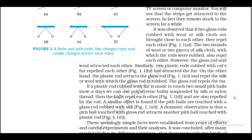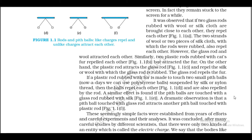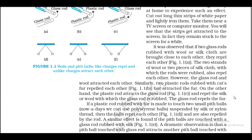If a plastic rod rubbed with fur is made to touch two small pith balls (nowadays we can use polystyrene balls suspended by silk or nylon thread), the balls repel each other (Figure 1.1d) and are also repelled by the rod. A similar effect is found if the pith balls are touched with a glass rod rubbed with silk (Figure 1.1e). A dramatic observation is that a pith ball touched with a glass rod attracts another pith ball touched with a plastic rod (Figure 1.1f).